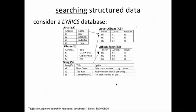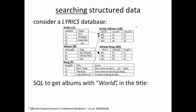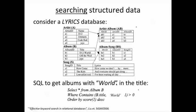Let's see what it would take in SQL to get the albums with 'world' in their title. One might write a SQL statement such as this, which is an Oracle SQL: select star from the album table where the title contains the string 'world'.